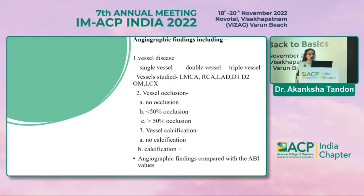Angiographic findings were classified as single vessel, double vessel, and triple vessel disease. The vessels studied were the left main coronary artery, right coronary artery, left anterior descending artery, diagonal arteries, obtuse marginal, and left circumflex artery.